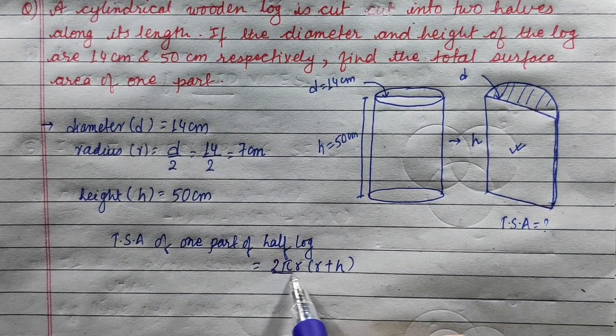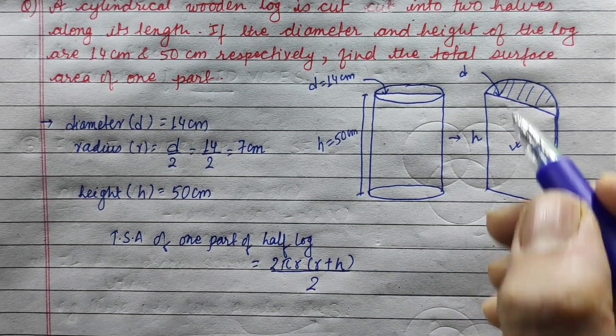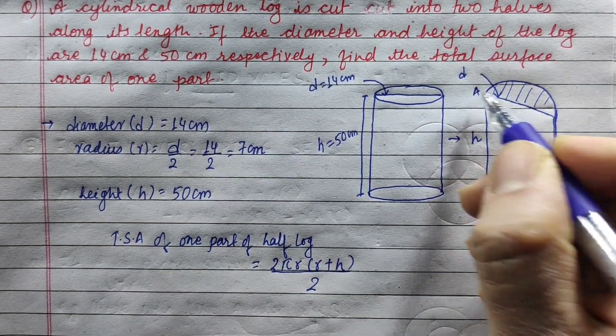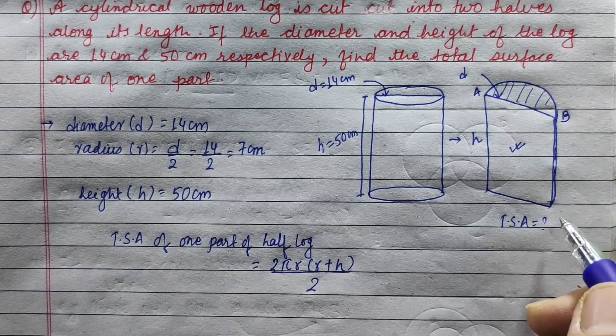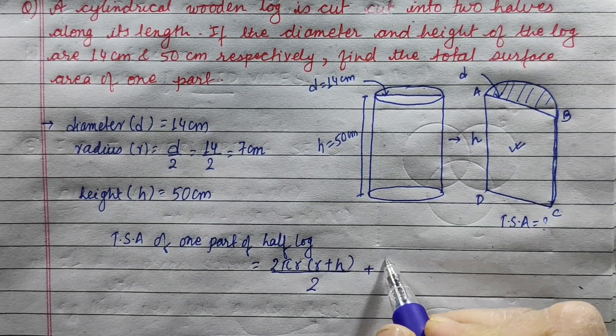we need to add the new rectangular area. Let's label it A, B, C, D. The rectangle is extra. This is the area of the rectangle.